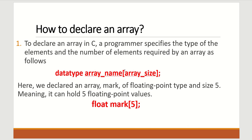Then in the square bracket you have to write the array size — that means how many elements or numbers you want. Here you can see we have declared an array. The name of that array is 'mark', the data type is float, and the size is 5. It means it can hold 5 floating point values. If you write 50, it can hold 50 floating point values.